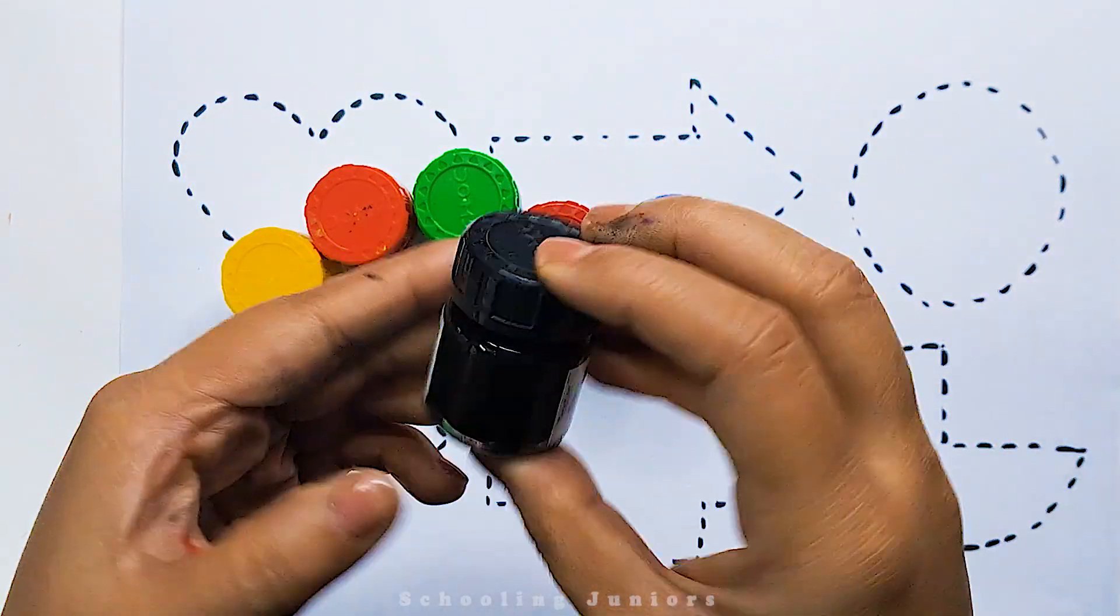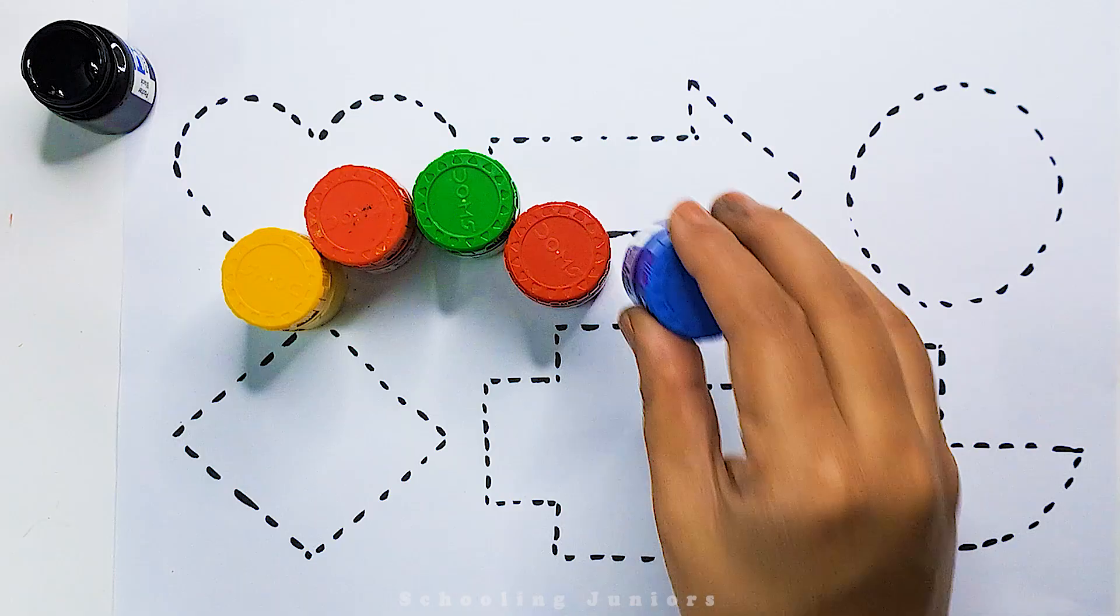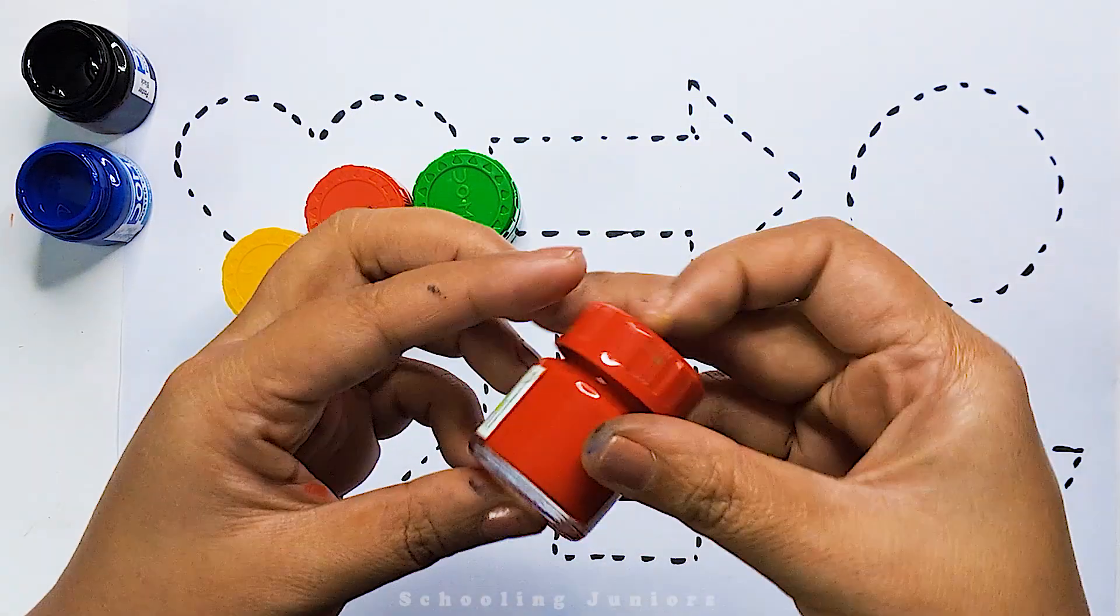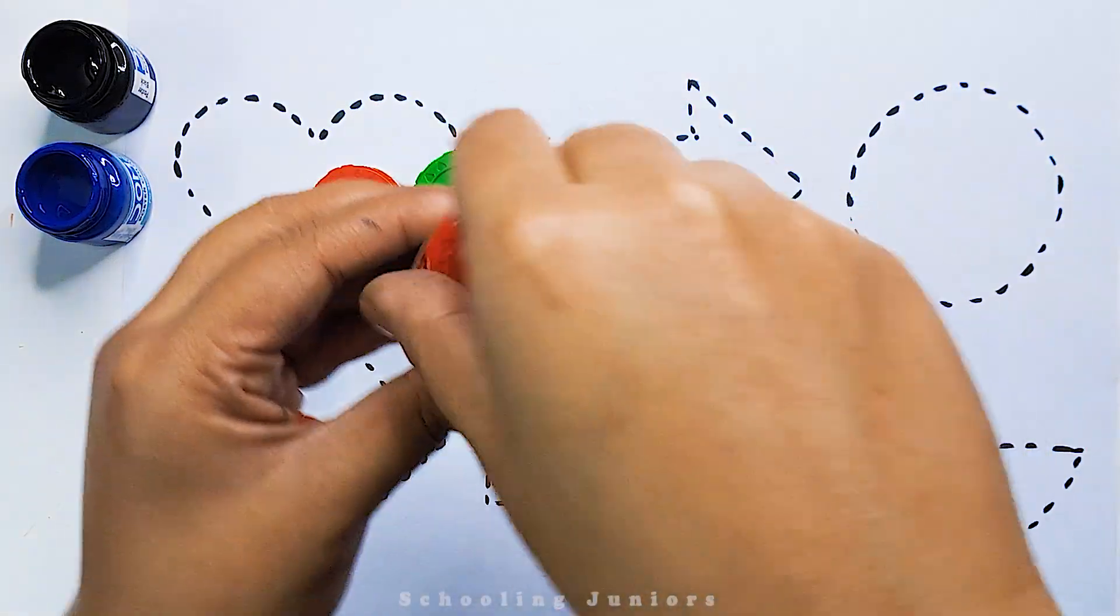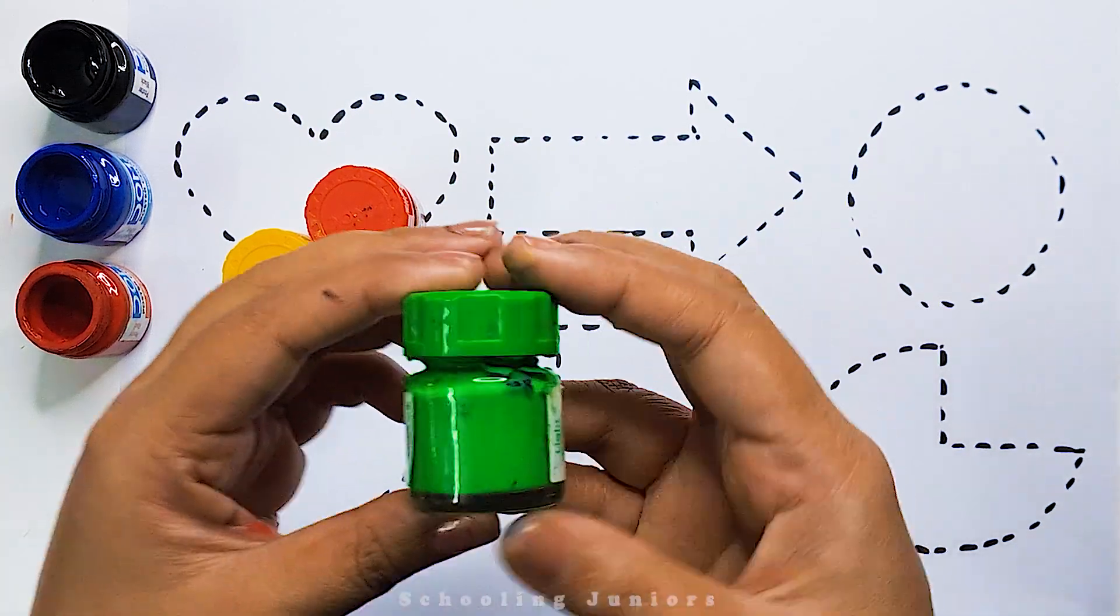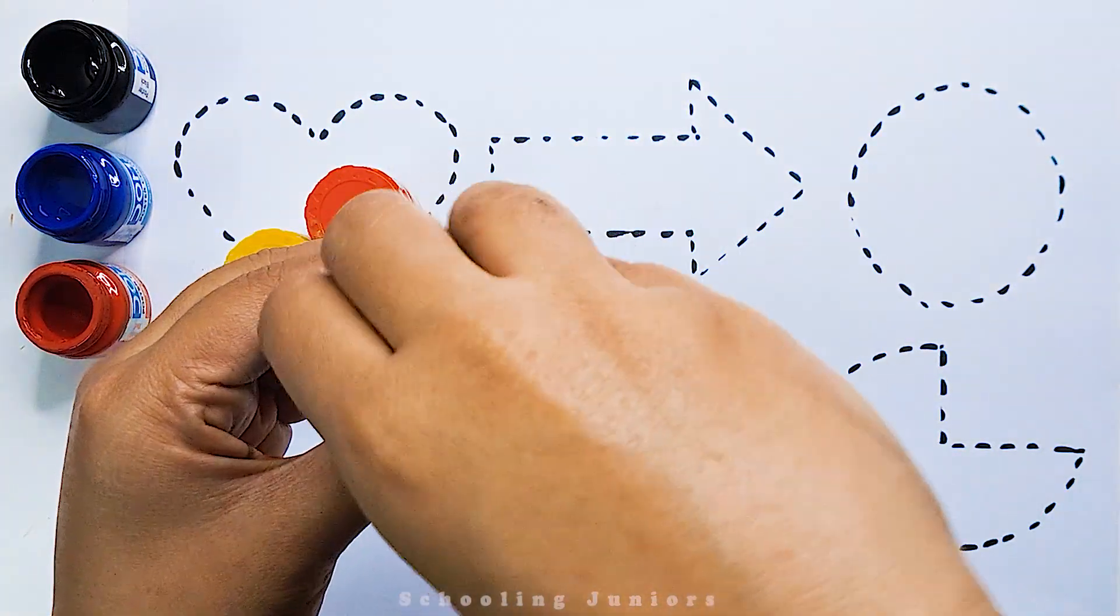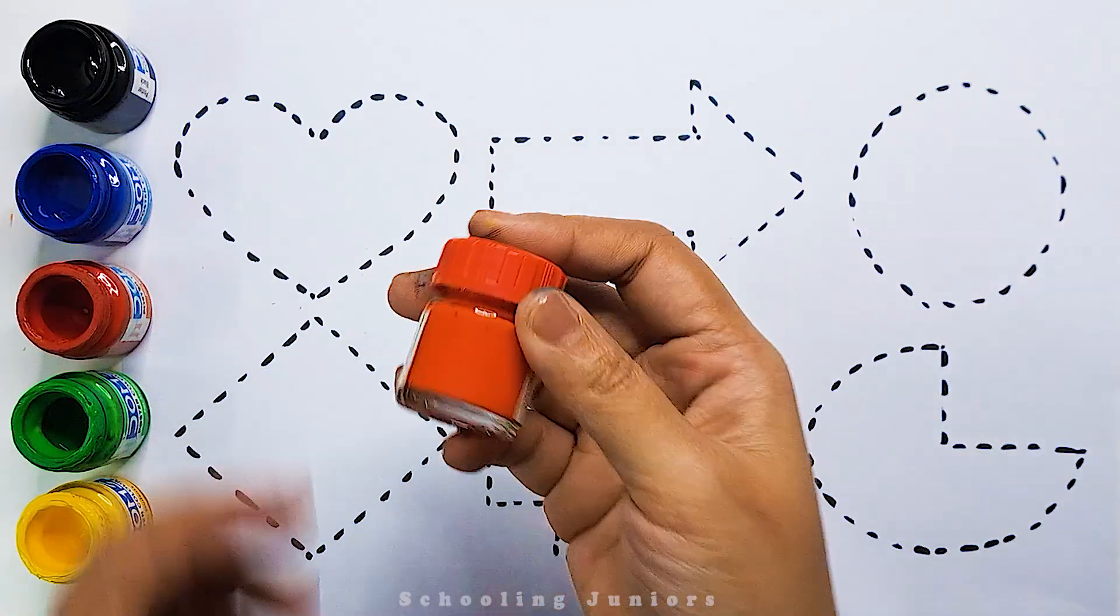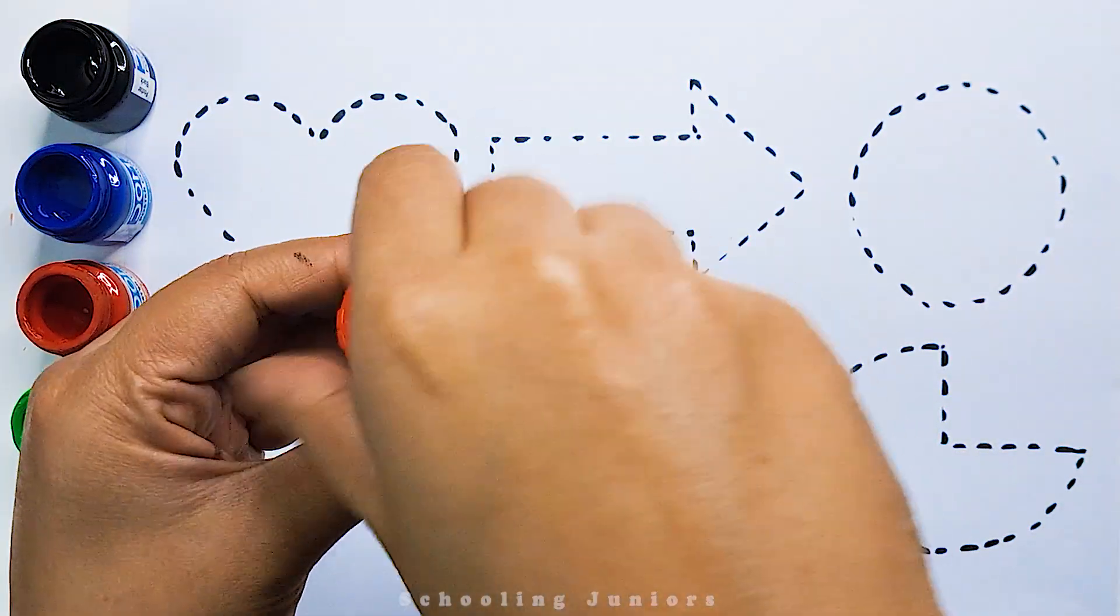This is black color. This is blue color. This is red color. This is green color. This is yellow color. This is orange color.